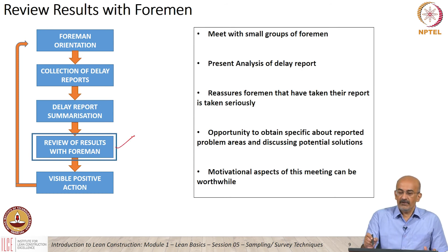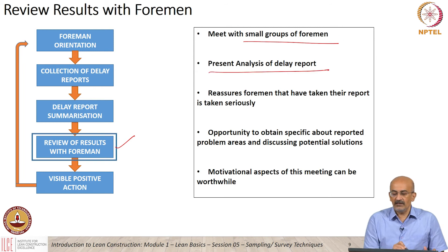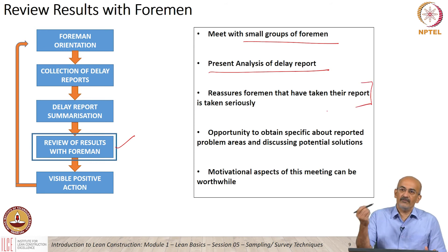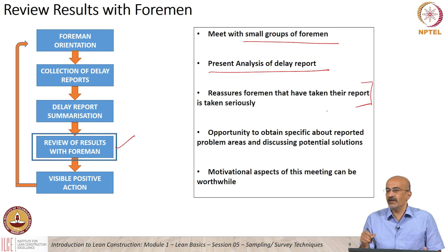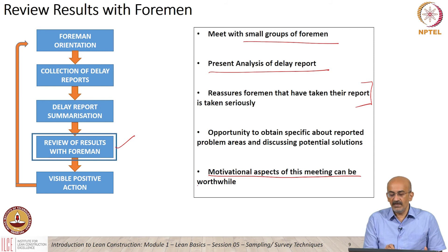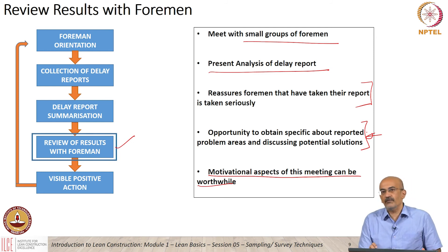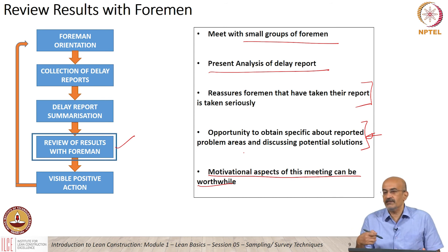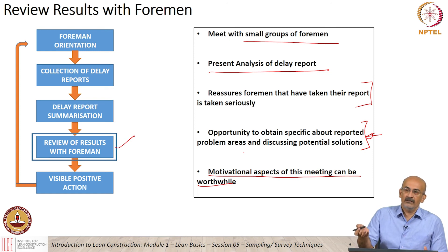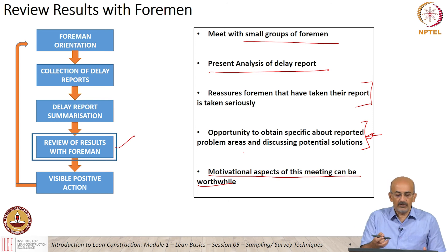Reviewing results with foremen means meeting small groups of foremen and presenting the analysis of the delay report. People have found this is very important because it is not that the report was submitted, somebody analyzed it, did something with it, and it went off. The feedback coming back to the foreman, showing the numbers and the big picture, makes them feel they are a part of the whole organization. It has a really strong motivational aspect. Not only this, but you also get the opportunity for sometimes the best solution. We have heard that a lot of what happens in lean is about empowering people — bringing this in actually empowers people and enables them to bring in their ideas. Sometimes those ideas are the best ideas; the top-down ideas are not necessarily the best ideas.